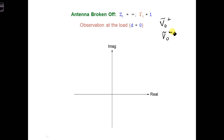First, draw the V0 plus phasor, and then also draw the V0 minus phasor in the complex plane when D is equal to zero.